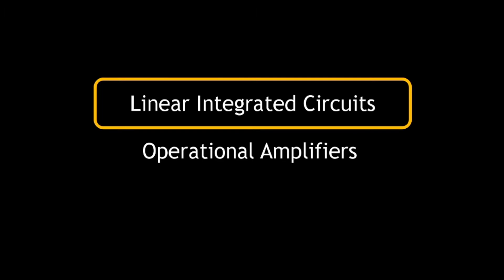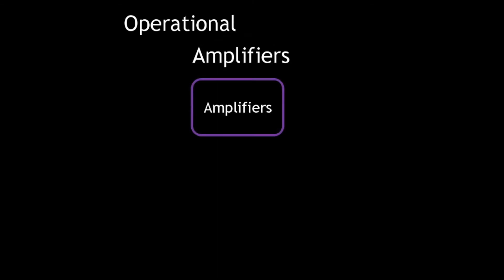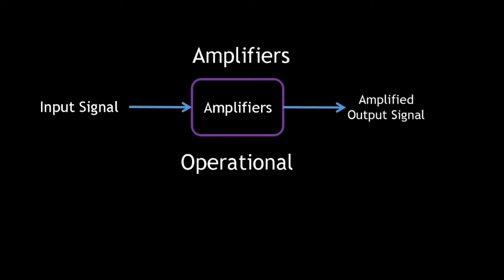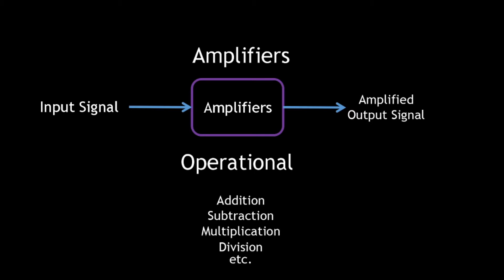Without waiting, let's get started. Let us break down the term 'operational amplifier.' Starting with amplifiers — an amplifier takes in an input signal and produces an amplified version of it. For example, a sinusoidal signal passed through an amplifier produces an amplified version. The word 'operational' means we can perform various mathematical operations such as addition, subtraction, multiplication, and division using this amplifier.